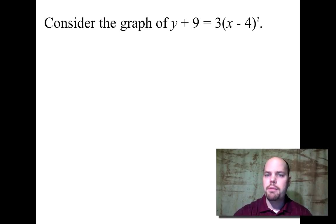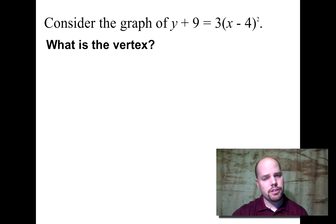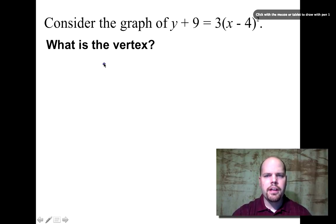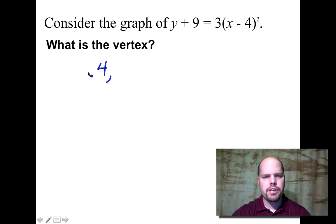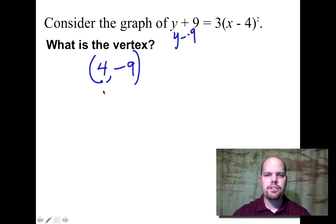Consider the graph of y plus nine equals three times the quantity x minus four squared. Pause the video and see if you can get the vertex without graphing — try one on your own. The answer: x minus four gives vertex x value of four. Y plus nine, which we think of as y minus negative nine, so the vertex is at (4, -9).